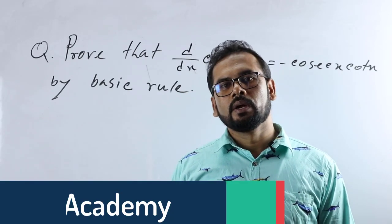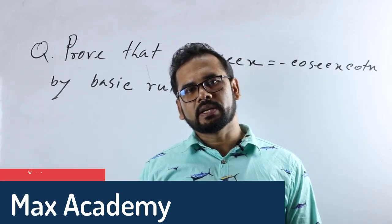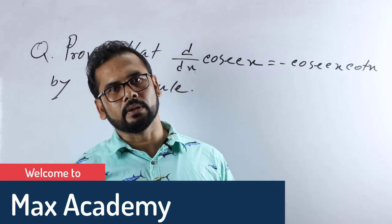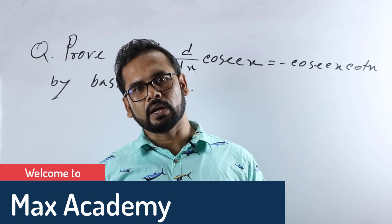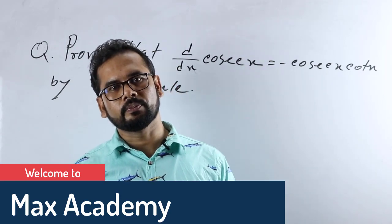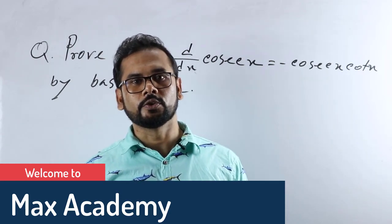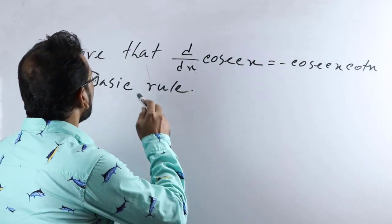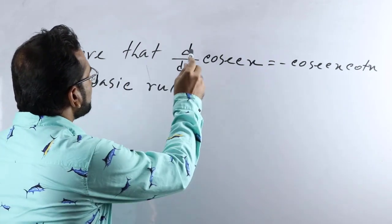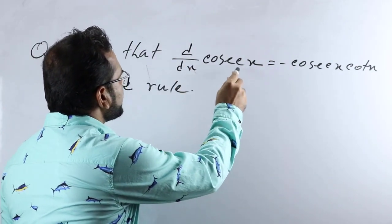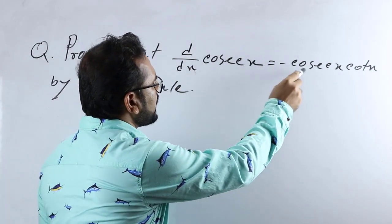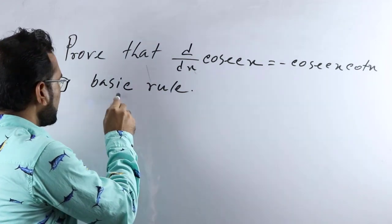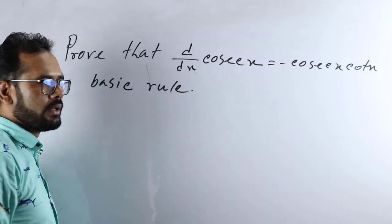Hello viewers, welcome to Max Academy. Today I am here with a very fundamental formula to prove: that d/dx of cosec x equals minus cosec x cot x, by basic rule.